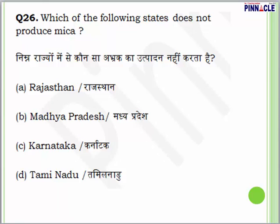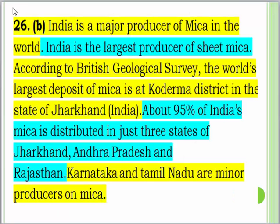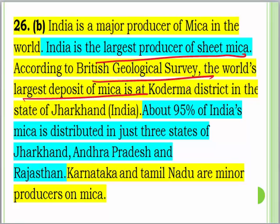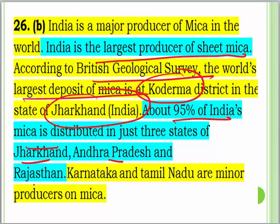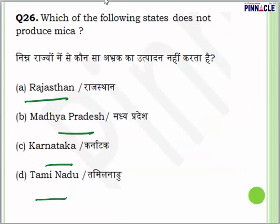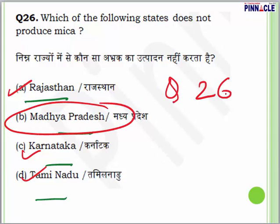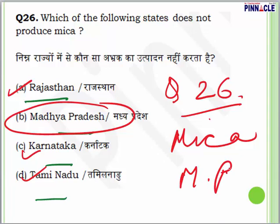First question: which of the following states does not produce mica? Options are Rajasthan, Madhya Pradesh, Karnataka and Tamil Nadu. India is a major producer of mica in the world and the largest producer of sheet mica. The world's largest deposit of mica is in Koderma, Jharkhand. 95% of India's mica is in just 3 states: Jharkhand, Andhra and Rajasthan. Karnataka and Tamil Nadu are minor producers. So Madhya Pradesh is the right answer — mica is not found in MP.